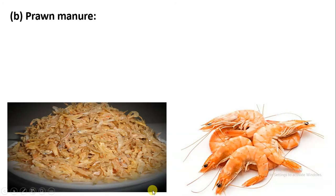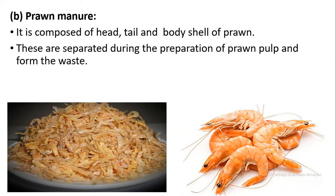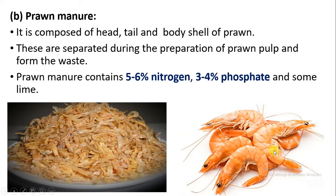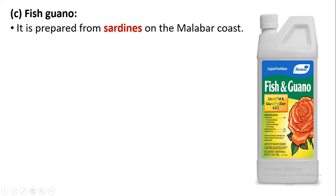Mackerels and sardines are the fishes used for fish manure. For prawn manure, the head, tail, and shell of prawns are not used for human consumption. These are separated from the prawn pulp and the waste — head, tail, and body — is converted into a manure containing 5 to 6 percent nitrogen, 3 to 4 percent phosphate, and some lime. Fish guano is prepared from sardines present on the Malabar coast.